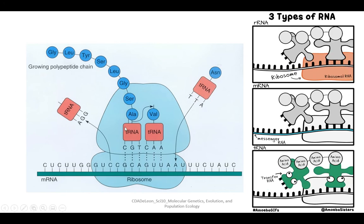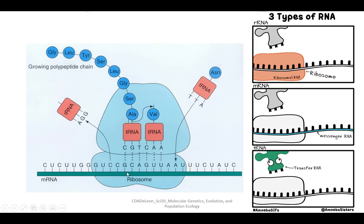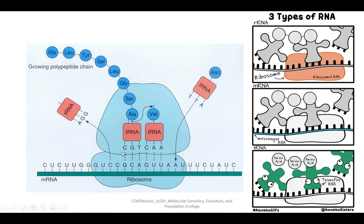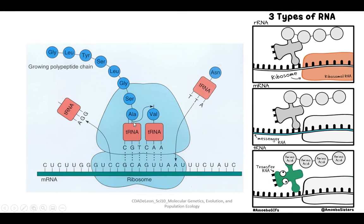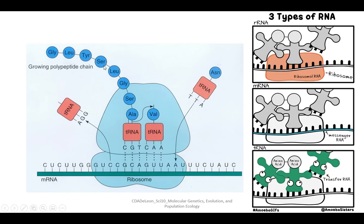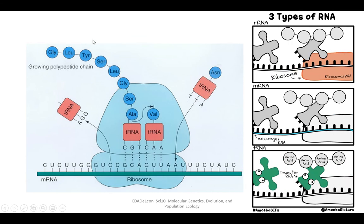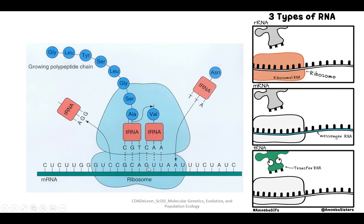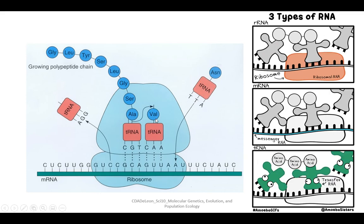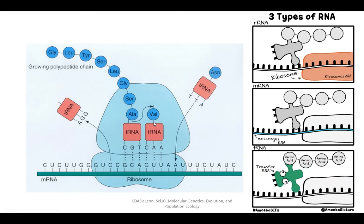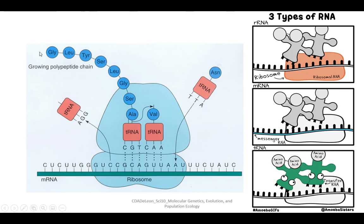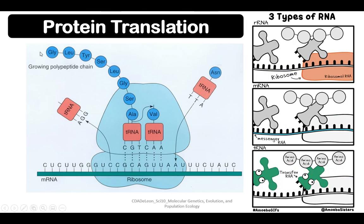Look at this diagram of the ribosome. The mRNA enters the ribosome. For example, the codon GCA — the corresponding tRNA anti-codon is CGT, which is the complement. The polypeptide chain is being formed above, eventually becoming a protein. For codon GUU, the tRNA anti-codon is CAA, and the amino acid corresponding to GUU is valine. The valine is added to the growing chain. That's protein translation.